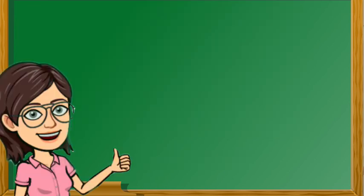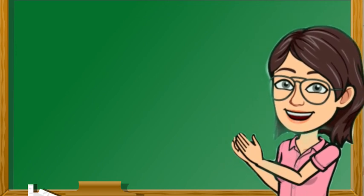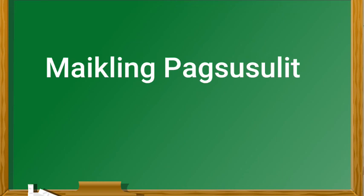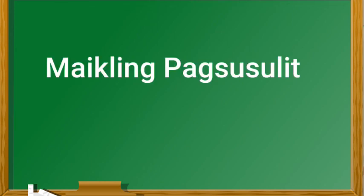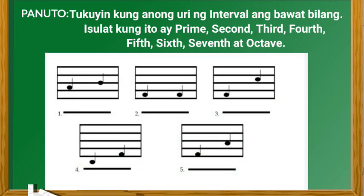Nakasunod ba lahat, mga bata? Magaling kung nakasunod kayo. At kung hindi naman, maaari kang bumawi sa susunod na gawain. Ngayon, kayo naman ang magsasagot sa ibibigay kong gawain. Maglabas ng malinis na papel o kwaderno at panulat at sagutan ito. Panuto, tukuyin kung anong uri ng interval ang bawat bilang. Isulat kung ito ay prime, second, third, fourth, fifth, sixth, seventh o octave. Maaari mong i-pause ang video para bigyang daan ng iyong pagsagot.